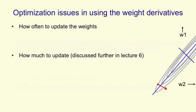So optimization issues are about how you use the weight derivatives. The first question is, how often should you update the weights? We could try updating the weights after each training case. You compute the error derivatives on a training case using backpropagation, and then you make a small change to the weights. Obviously, this is going to zigzag around because on each training case you'll get different error derivatives. But on average, if we make the weight changes small enough, it'll go in the right direction.